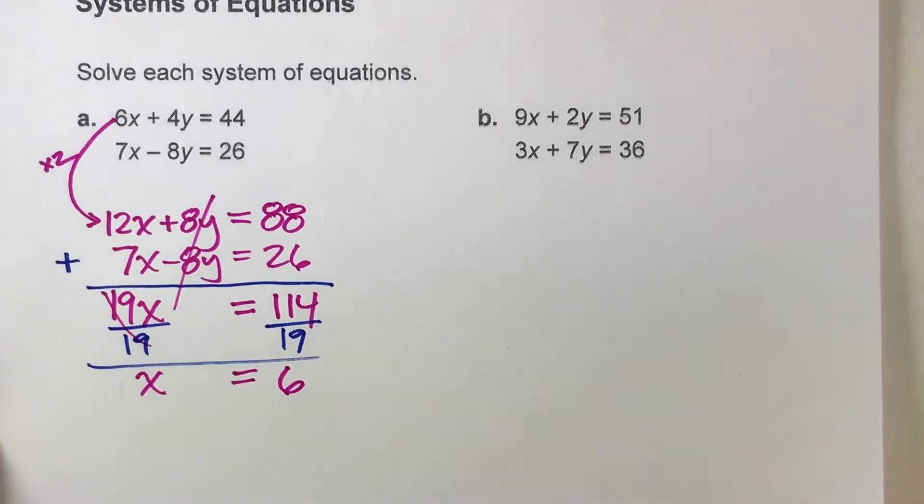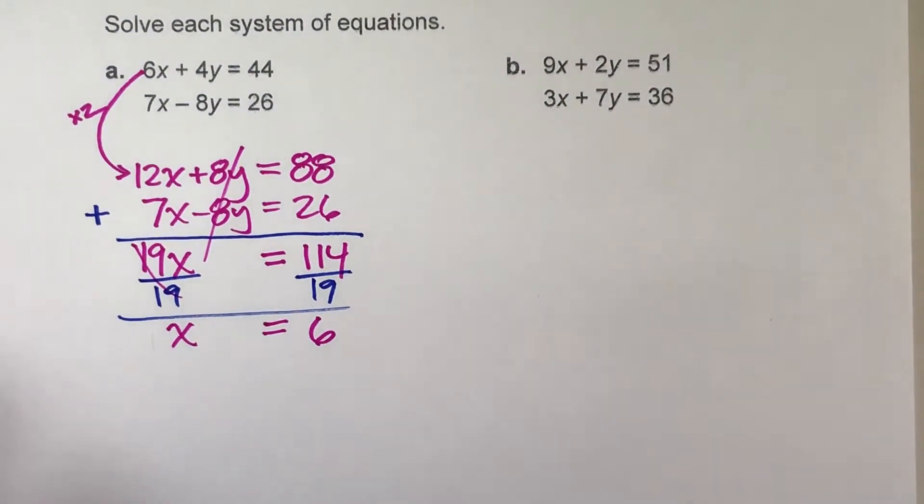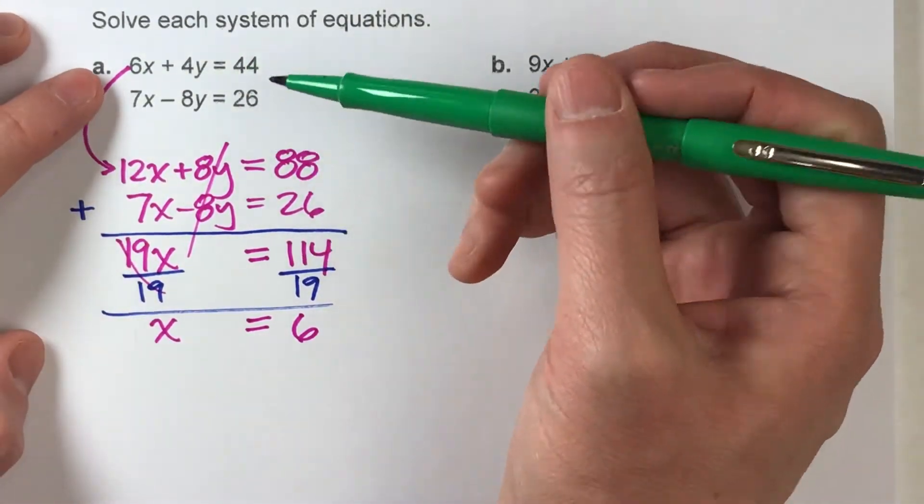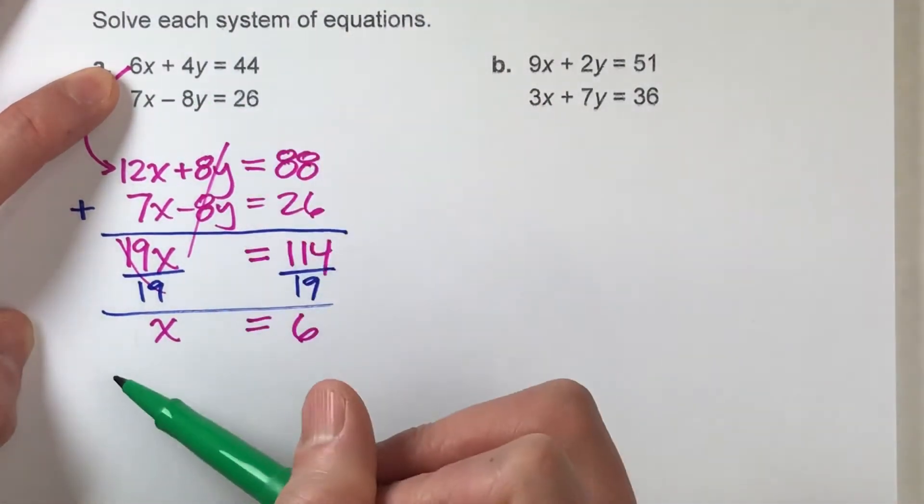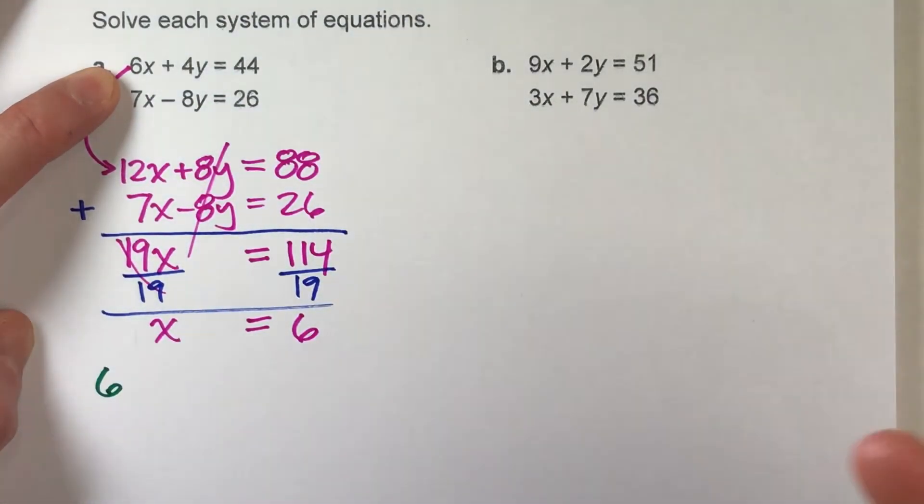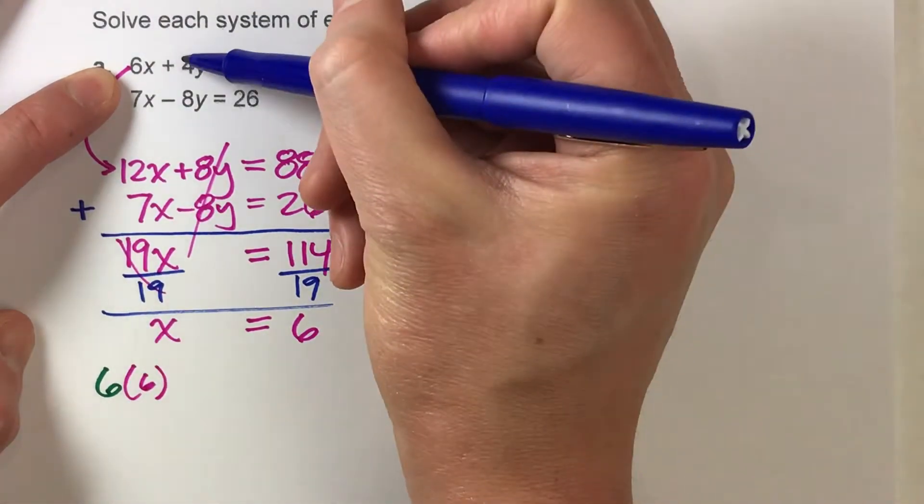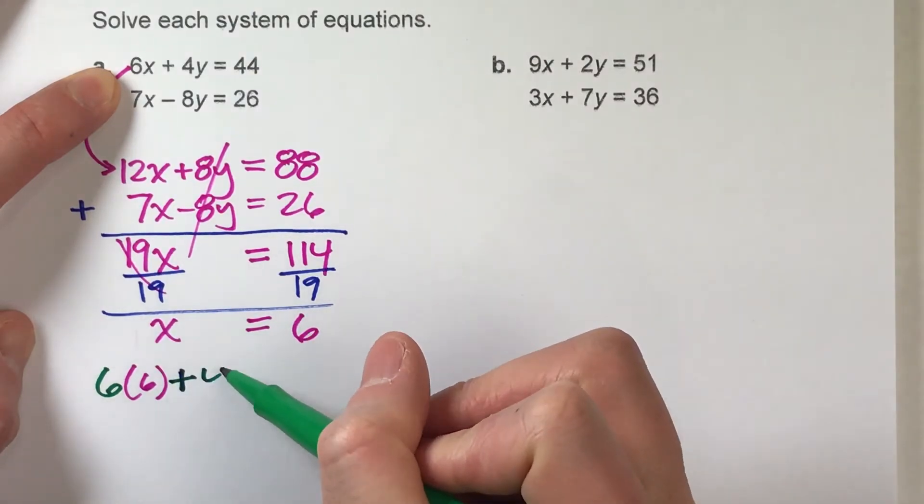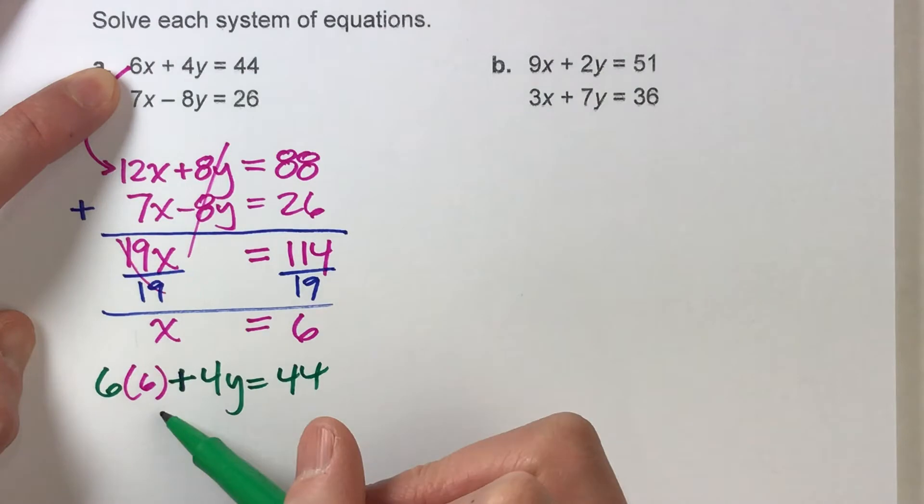Now that I've got my X, I can go back and find Y. To find Y, I'm just gonna take the X value and put it back into one of my original equations. I'm gonna pick the first one because it's easier. So instead of 6 times X, I'm gonna do 6 times 6, plus 4Y equals 44. This is basically 36 plus 4Y equals 44.